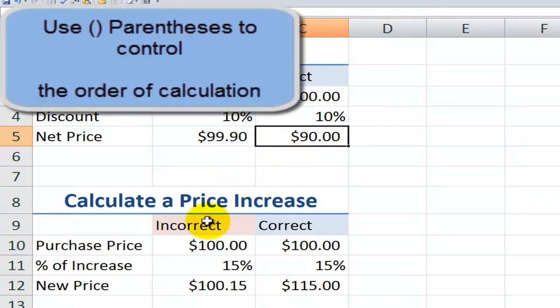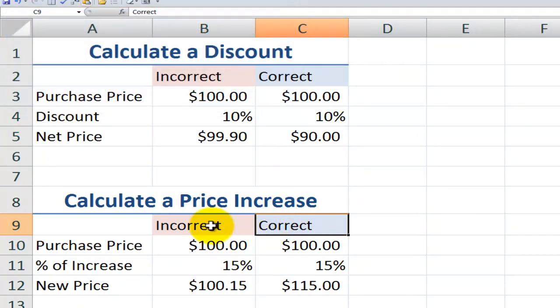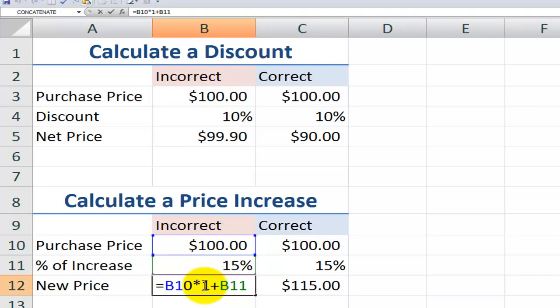Likewise, down here, I have an incorrect way and a correct way to calculate a price increase. I want to increase prices by 15%. Unless I use left and right parentheses to control the order of calculation, I'm going to get an incorrect result.